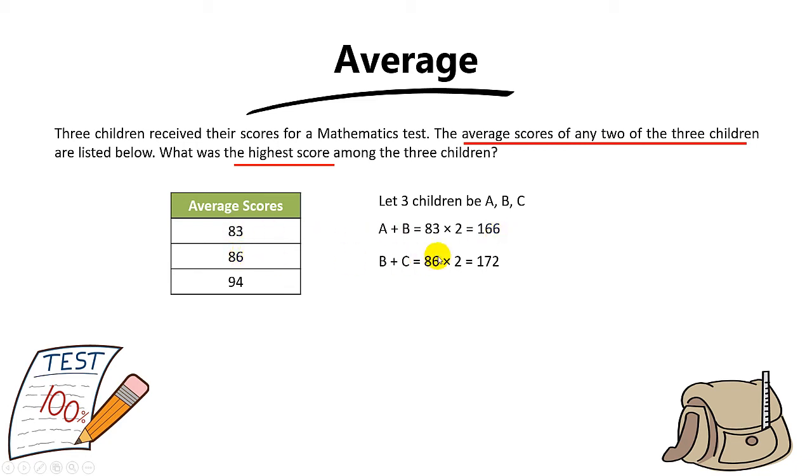Then to find B and C, you take 86 times 2, you get 172. And lastly, to find A and C, you take 94 times 2, you get 188.